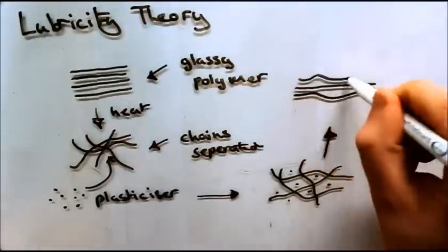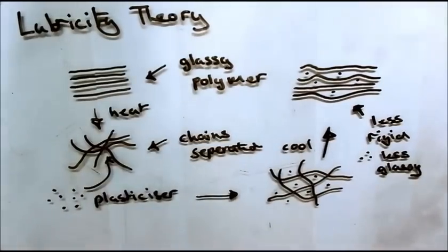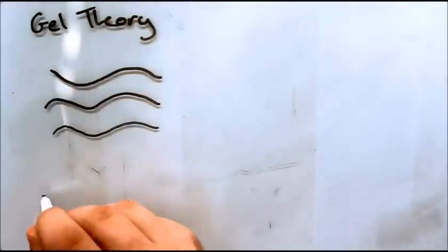The simplest theory is the lubricity theory. This theory suggests that the plasticizer is introduced in between chains of polymers, allowing the chains to slide more freely over each other.